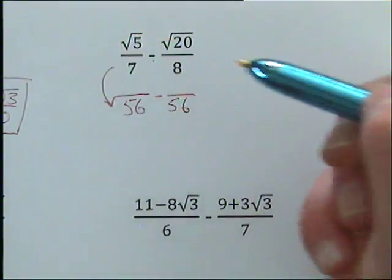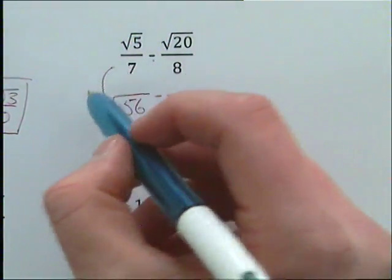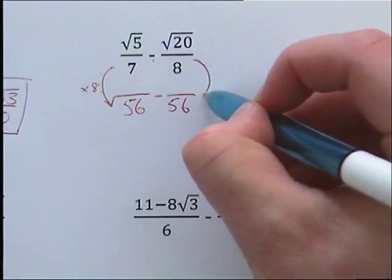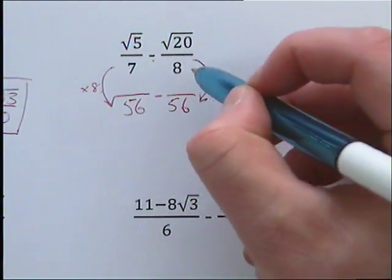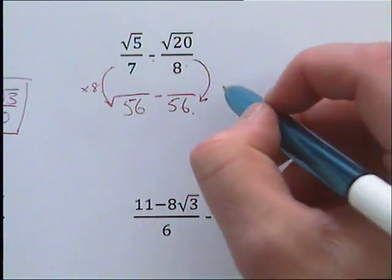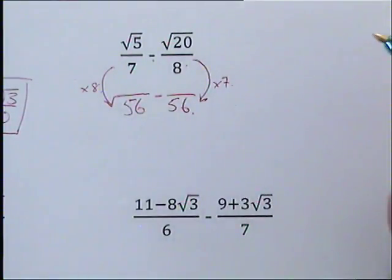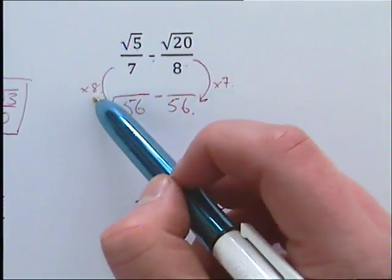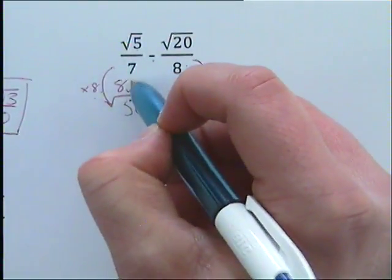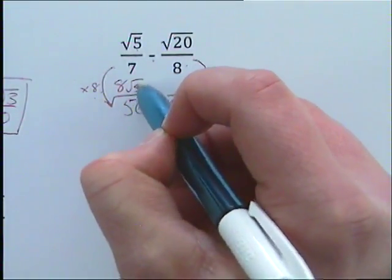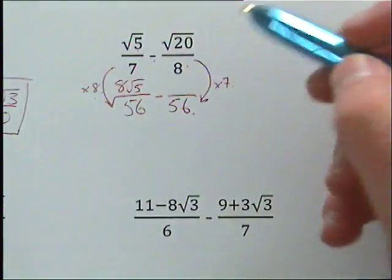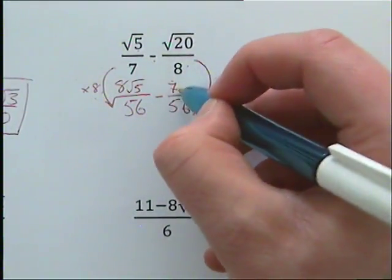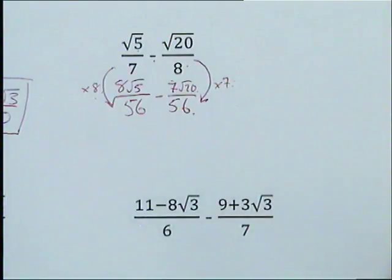What did we have to times 7 by to get 56 on the bottom? We had to times it by 8. What did we have to times our 8 by to get 56? We had to times it by 7. So we need to do the same to our top. So root 5 times 8 gives 8 root 5. And root 20 times 7 gives 7 root 20.